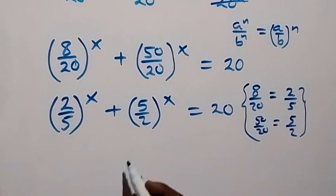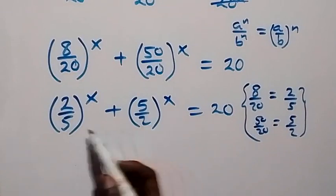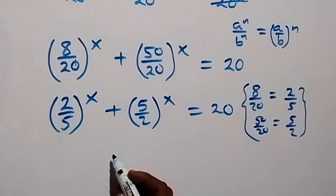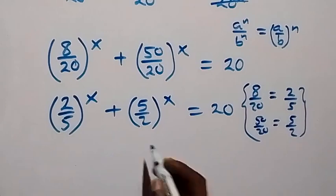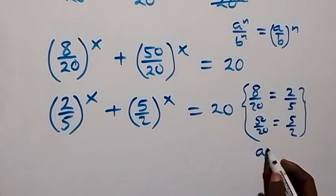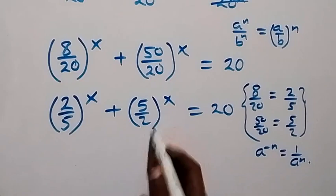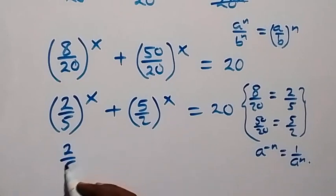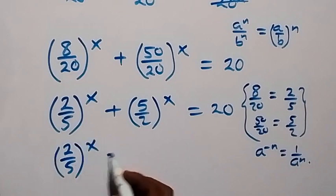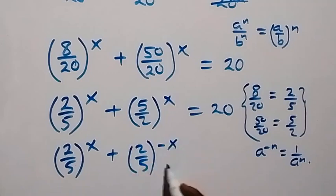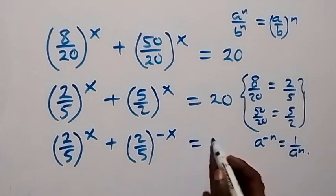In the next step, what we have here is a reciprocal of what is here, so we can take the reciprocal. That is, when we have something of the form a raised to power minus n, it is the same as 1 over a raised to power n. So we now write it as (2 over 5) raised to power x, plus (2 over 5) raised to power minus x, equals 20.